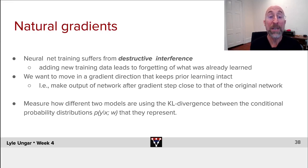What we'd like to do in a natural gradient is to go in a gradient direction that moves down the gradient, decreasing error, but does it in a way that changes the outputs of the neural net on the other data as little as possible. Which keeps the KL divergence between the old output distribution and the new output distribution as similar as possible.